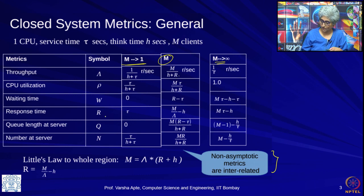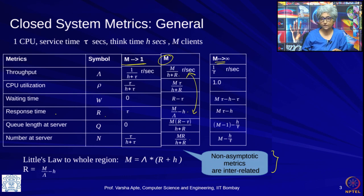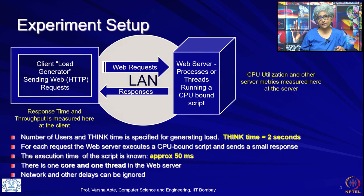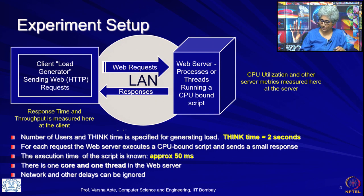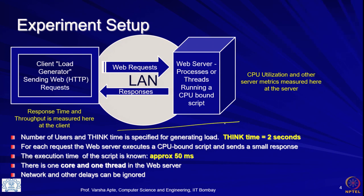For example, throughput is in terms of R, number at servers also in terms of R, and response time is in terms of throughput. These are interrelated — we do not really know how to calculate them independently; we are going to learn that later, but today this is all we know. Again, recall the earlier lecture where we had done this measurement case study of a web server — the setup is identical in terms of what is going on at the server.